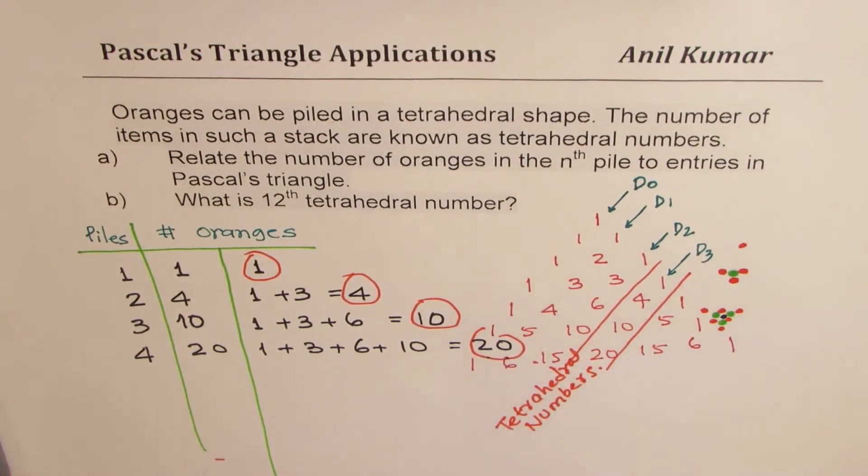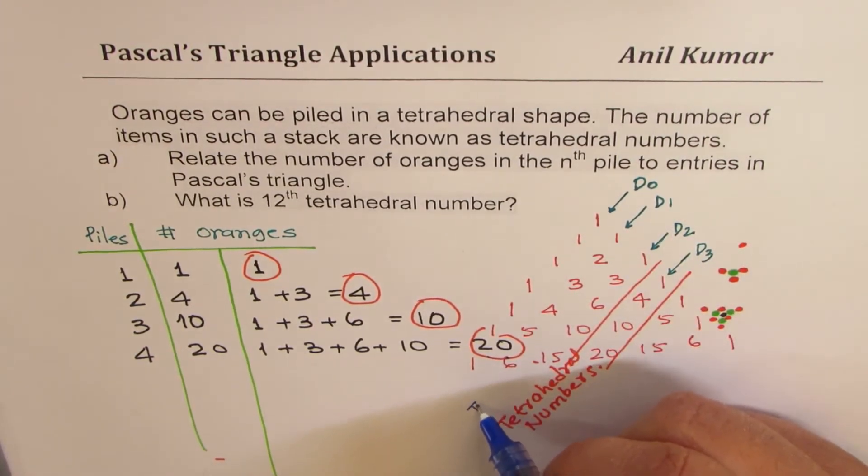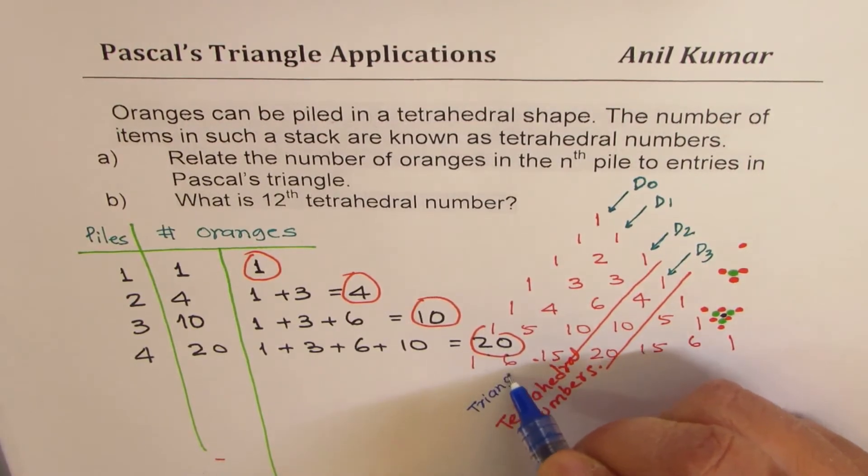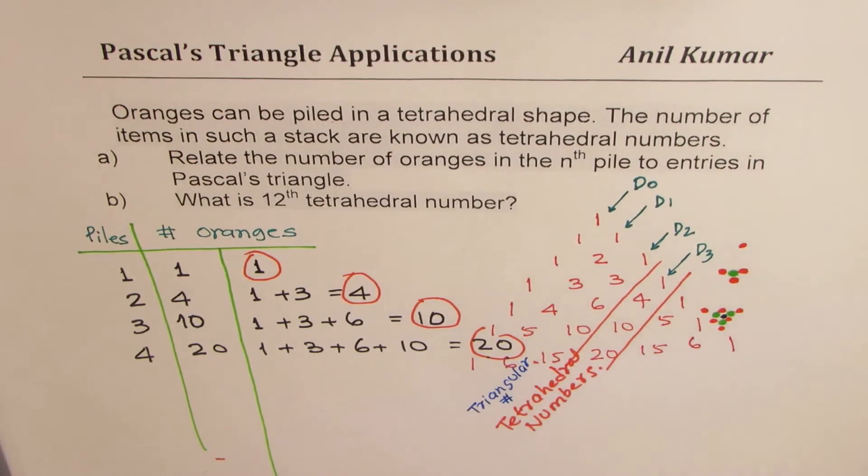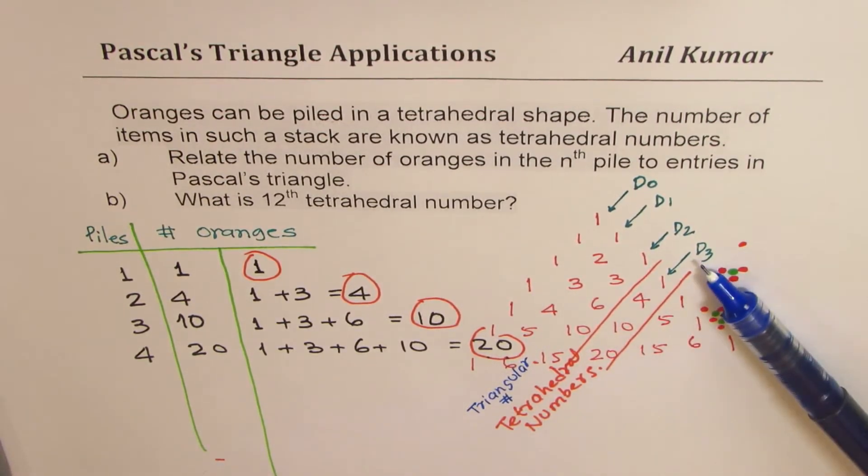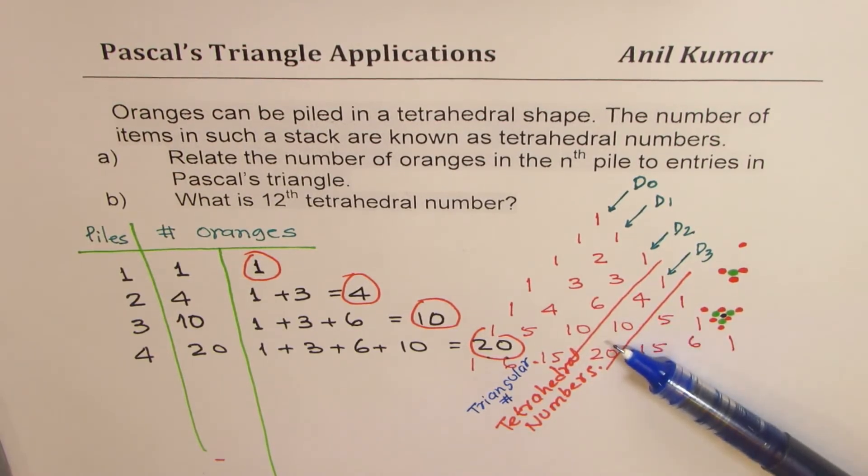So this is the diagonal we are looking for. So this diagonal has all tetrahedral numbers. I hope you remember what the numbers in the diagonal before the number. So before this, diagonal two is triangular numbers. So I hope you see a relation. So the diagonal three in our case gives all the tetrahedral numbers. So that is how we get it.